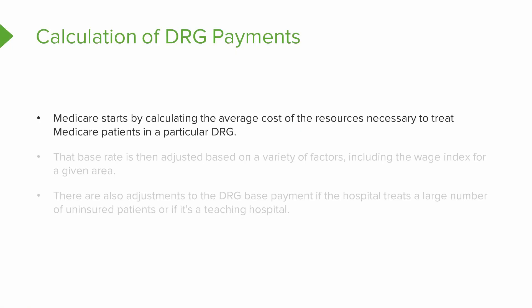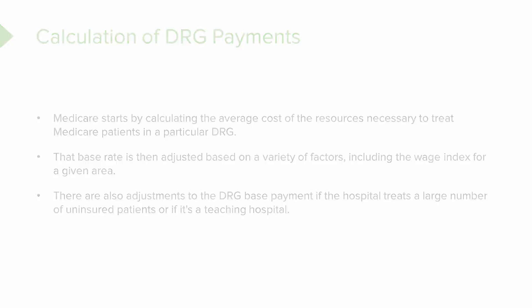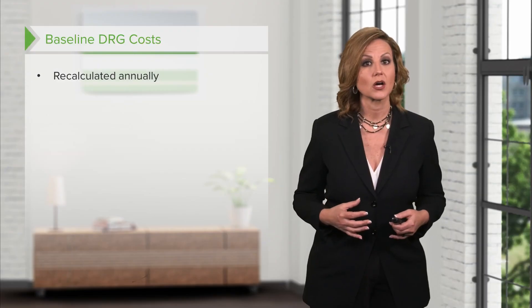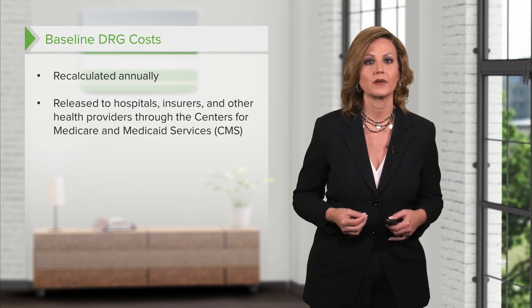Let's discuss how DRG payments are calculated. Medicare starts by calculating the average cost of the resources necessary to treat Medicare patients in a particular DRG. That base rate is then adjusted based on a variety of factors, including the wage index for that given area. There may also be adjustments to the DRG-based payment if the hospital treats a large number of uninsured patients or if it's a teaching hospital. Baseline DRG costs are recalculated annually, and that information is released to hospitals, insurers, and other health providers through the Centers for Medicare and Medicaid Services.